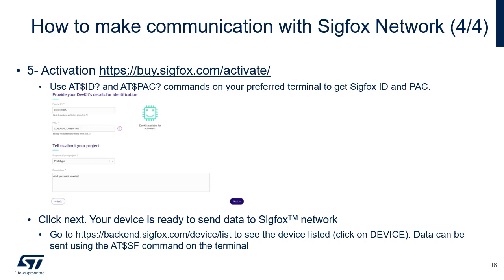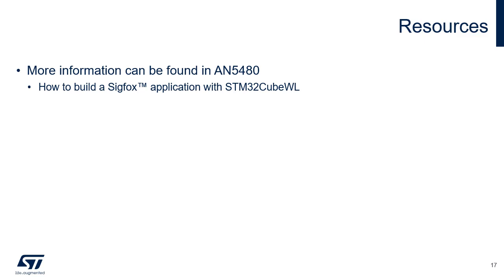Use the proper AT commands to get the Sigfox ID and Sigfox pack. Log in on pi.sigfox.com/activate, paste the device ID and pack into the activate form and click next, and the device will be activated. To see the messages, log on to back-end.sigfox.com and browse to the device list where the device should be visible. Data can be sent using the AT$SF command on the terminal. The device sends data to the Sigfox network and messages are visible on the back-end. Click on the device ID and go to the messages tab. More information can be found in AN5480 regarding the way to build a Sigfox application with STM32CubeWL.